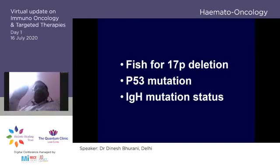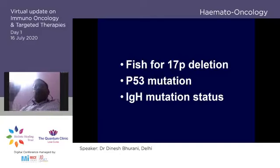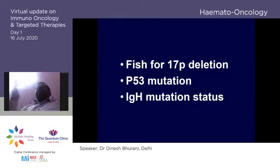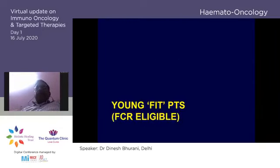What is very important before treatment is getting the right tests. Three tests are key: FISH for 17p deletion, p53 mutation testing, and IGHV mutation status. The first two are must-have tests and IGHV mutation status is highly desirable, as these will change the treatment algorithm and help us target therapy appropriately.